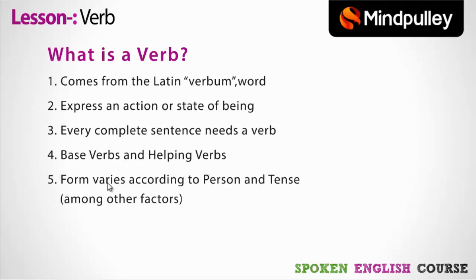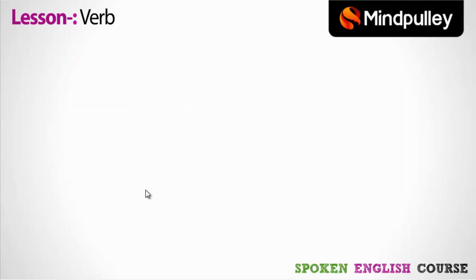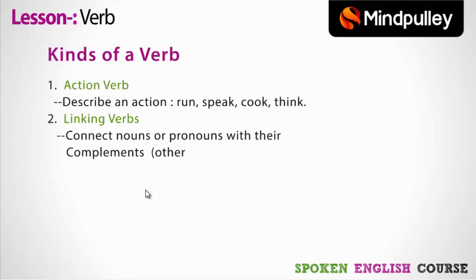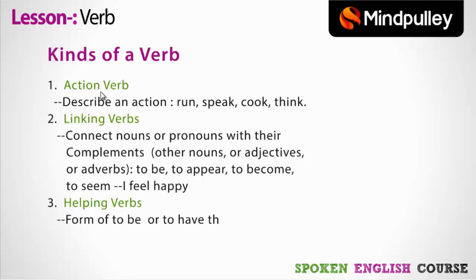Verbs form various forms according to the person and tenses. Yaani ki jo verb hai, woh person ke according — yaani ki jo person action kar raha hota hai uske according — aur tense ke according change ho jaati hai. Ab hum dekhenge ki verb kitne tarah ki hoti hai, yaani ki what are the three major kinds of verb. Verb basically teen tarah ki hoti hai.